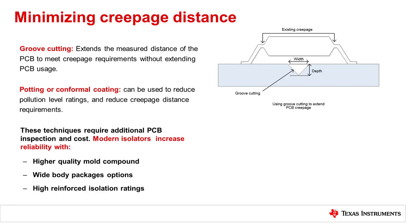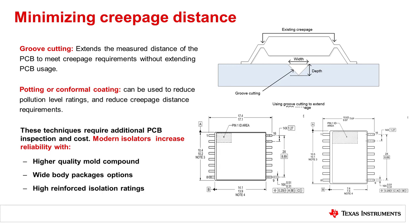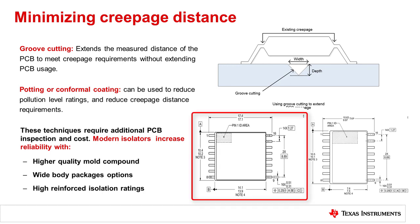One effective way to reduce creepage and clearance without conformal coating or potting is to select a wide-body isolator manufactured with high-quality mold compound. The wide-body package meets IEC creepage requirements of 14.5 mm, and because many new isolators use the higher-quality mold compound of material group 1, they enable high-altitude designs and tolerate higher pollution degrees without requiring additional steps in PCB manufacturing.